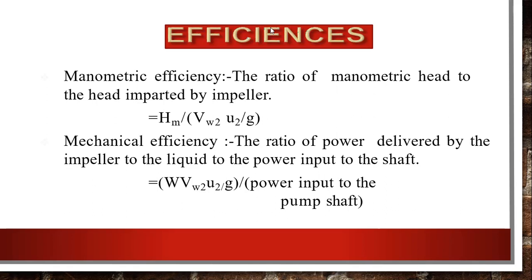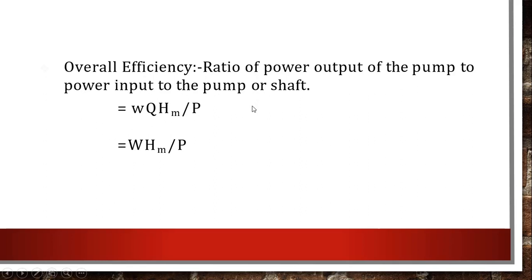These are the efficiencies of a centrifugal pump. Manometric efficiency is the ratio of manometric head HM to the head imparted by the impeller. Mechanical efficiency is the ratio of power delivered by the impeller to the power input to the shaft. Overall efficiency is the ratio of power output of the pump to the power input to the pump or shaft — output divided by input — and its formula is η = W·HM / P.